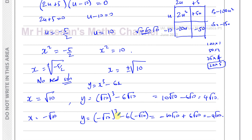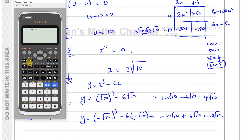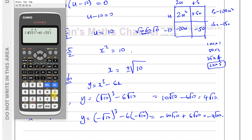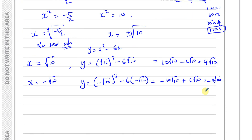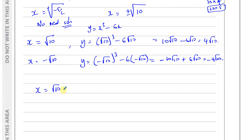Let me confirm these using a calculator, since I didn't have the mark scheme at the time of making this. Root 10 cubed minus 6 times root 10 gives 4 root 10. And negative root 10 cubed minus 6 times negative root 10 gives minus 4 root 10. So our solutions are: x equals root 10, y equals 4 root 10; and x equals negative root 10, y equals negative 4 root 10.